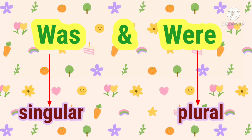Let's know what is the difference in their usage. Children, the most basic concept of was and were is: was is used with a singular noun or pronoun, and were is used with a plural noun or pronoun.